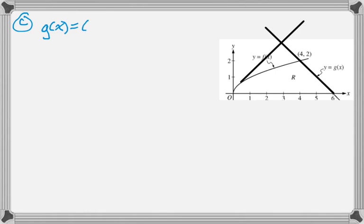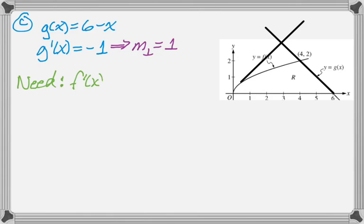So what I need first is the slope of g of x, which is easy enough to get. I mean, you don't really need a derivative, it's just a line. So the slope of g of x is negative 1. So the slope of a perpendicular line would just be positive 1. So what I really need is for f prime of x to equal 1, and then I'll solve that.